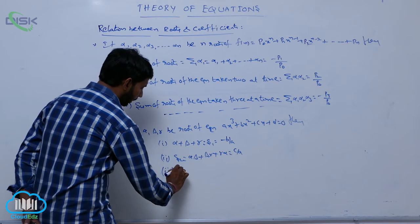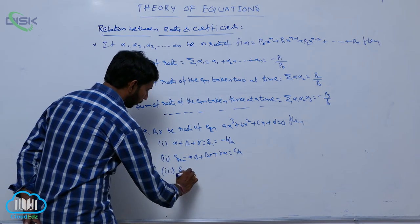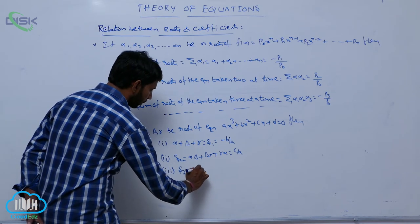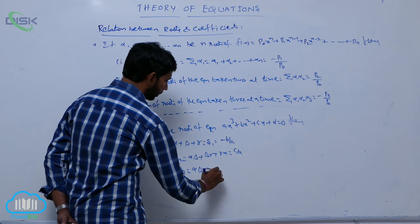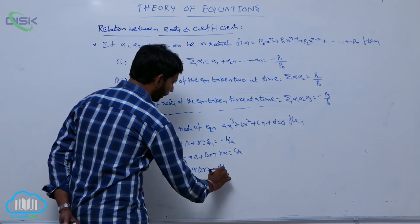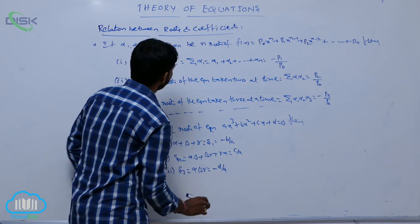And next, s3 is equal to the product of all three roots, that is alpha beta gamma, is equal to minus d by a.